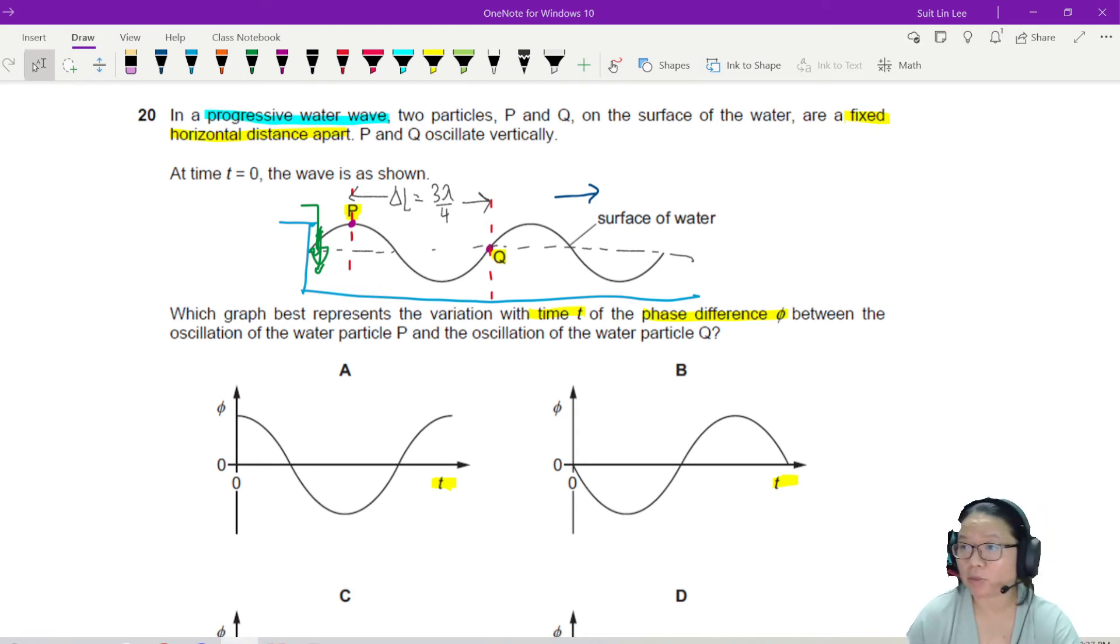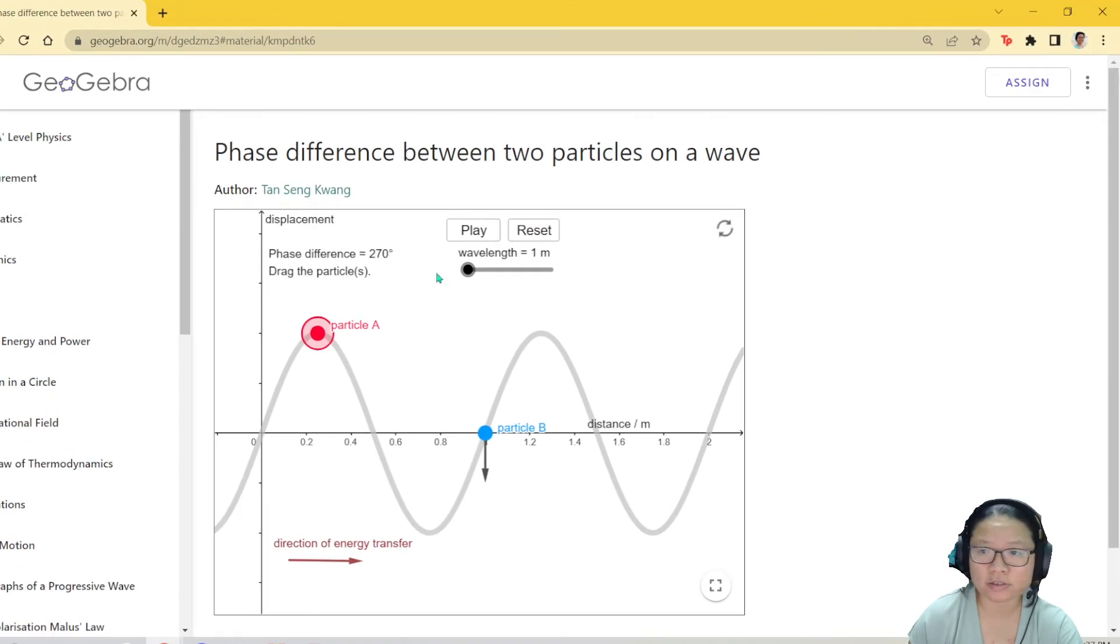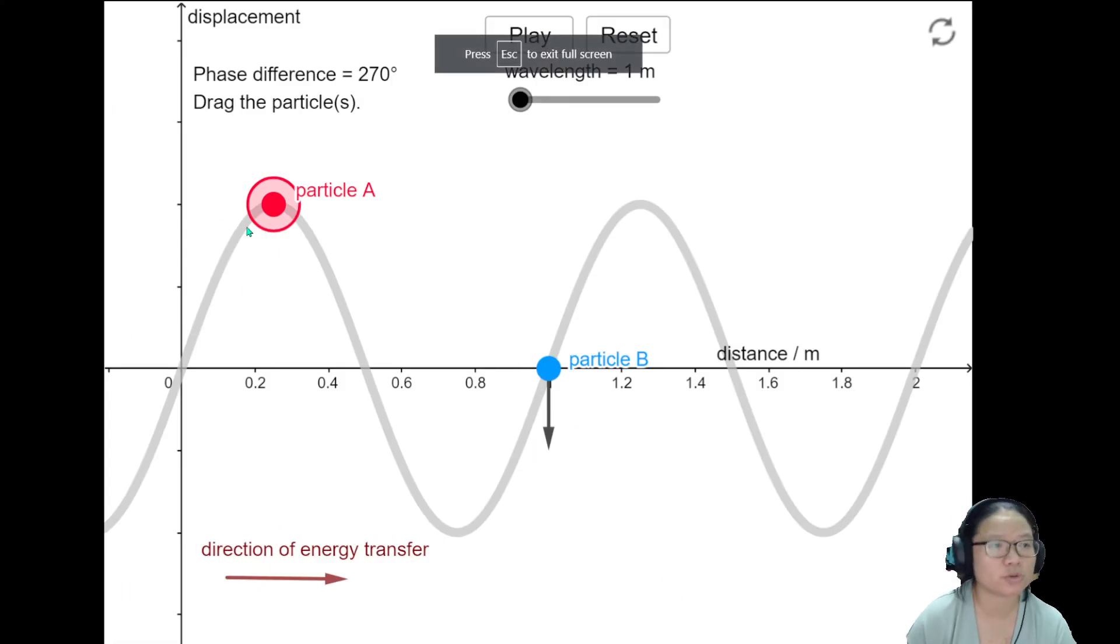So to help you visualize better what I'm talking about, okay, P is at the peak and Q is at the equilibrium position. Okay, I'm going to replicate this on this simulation. Okay, so if you look at this simulation,